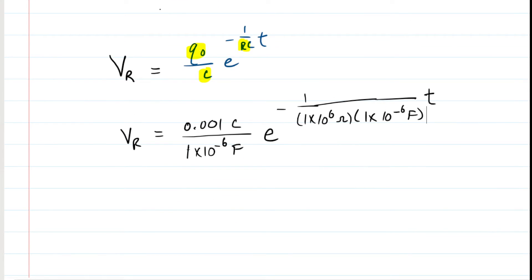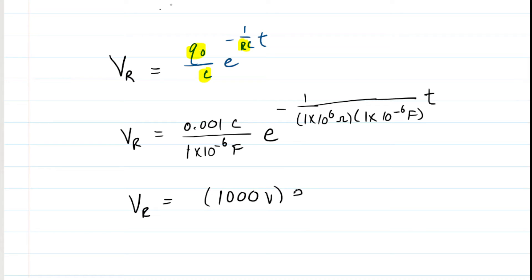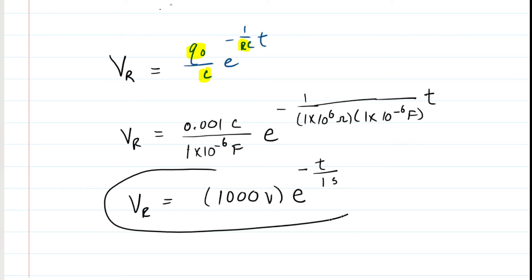Dividing the leading coefficient again gives 1,000 volts, and the time constant RC is 1 second. So V_R equals 1,000 volts times e to the negative t over 1 second. This is the correct answer for Part D.